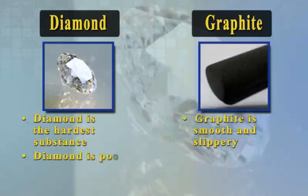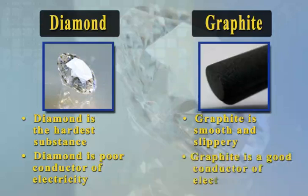Diamond is a poor conductor of electricity, and graphite is a good conductor of electricity.